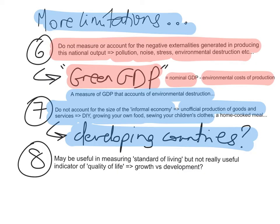Lastly, national income statistics may be useful in measuring standard of living, but they're not a very useful indicator of quality of life. It's a very materialistic measure — a country with a higher real GDP per capita doesn't necessarily mean its citizens are happier or have a higher quality of life. This is where the difference between growth and development comes into play. So while national income statistics are useful, they have their limitations, and you need to be aware of these limitations and be able to evaluate their use, as well as understand the concept of green GDP as a modern approach to accounting for environmental destruction in national income statistics.